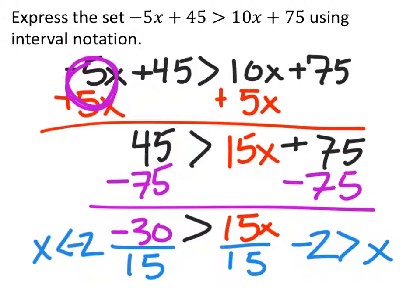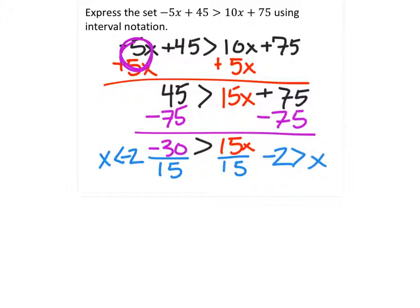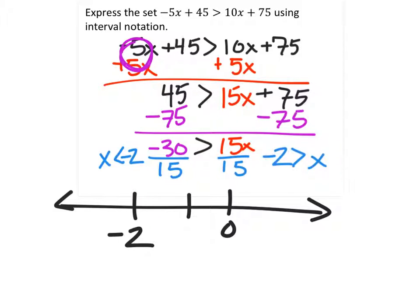Now with that being said, it did ask for interval notation, which we will want to write. Something that I notice usually helps people out with interval notation is this number line. So if we go from 0 to negative 2, negative 2 is where it's equal. It's not included as part of the solution. So it will be a curved bracket, parentheses, whatever you want to call it,